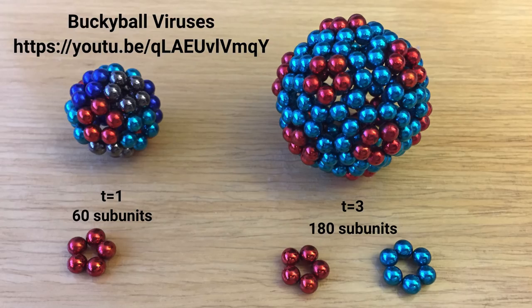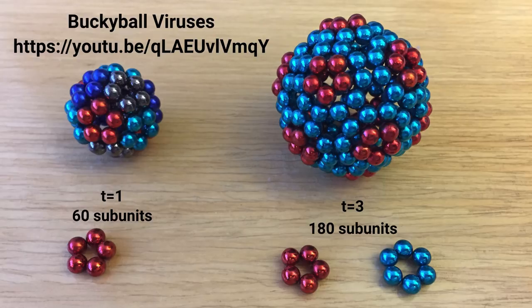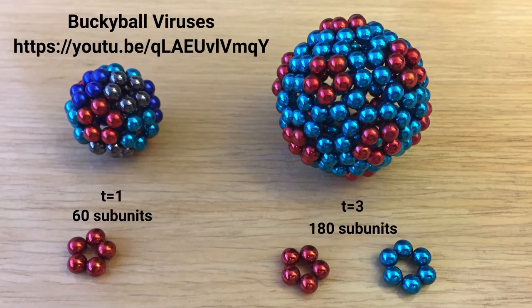I use buckyballs to illustrate this — they're perfect for it. Here is a T equals 1 with 60 magnets, all the same — only pentamers, no hexamers in T equals 1. You can see all the pentamers: 12 times 5 equals 60 subunits. On the right is a T equals 3 with 180 subunits of the same magnet — pentamers in red and hexamers in blue. When you put more in, you automatically get hexamers and pentamers. There's a video of me building these things if you want to look at it. Poliovirus is a 30 nanometer particle made up of 180 subunits. There are actually three different proteins making up this particle — so it's called pseudo T equals 3 because a real T equals 3 would be the same protein 180 times. The subunits VP1, 2, and 3 are shown in blue, yellow, and red.